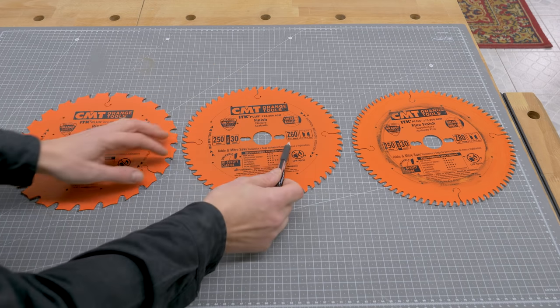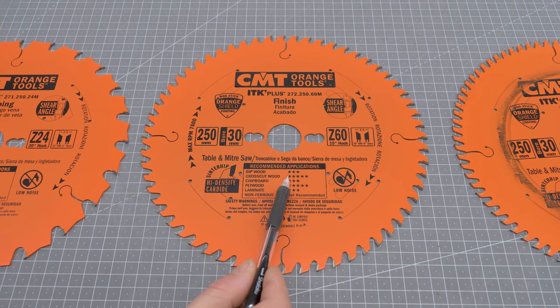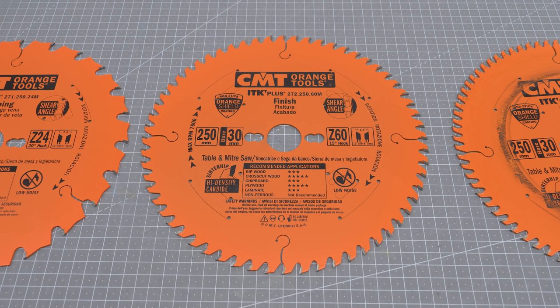The second one has 60 teeth and is a jack of all trades, so to speak. It can do all kinds of cuts in all kinds of materials, but it isn't as good at each specific job as the other two.